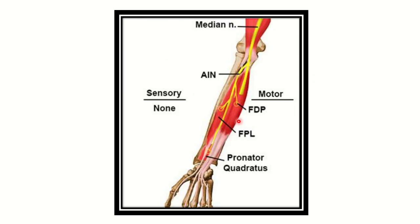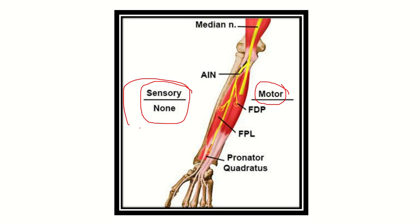In this picture, we can also see the names of the muscles. This is the anterior interosseous nerve — AIN — that means the anterior interosseous nerve. And this anterior interosseous nerve, it's only a motor nerve. That means it supplies only the muscles, but it has no sensory supply. This point is very important: the anterior interosseous nerve has no sensory supply — it supplies only the muscles.